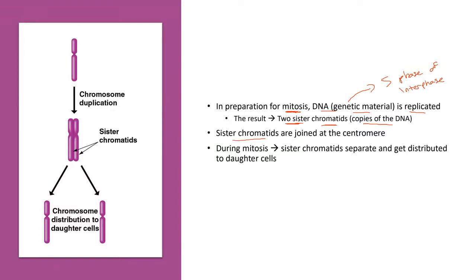The sister chromatids are going to be joined at the center at a structure called the centromere, which holds both sister chromatids together. During mitosis, the sister chromatids are going to be separated and distributed to daughter cells — one sister chromatid stays in one cell, and the other sister chromatid stays in the other cell.